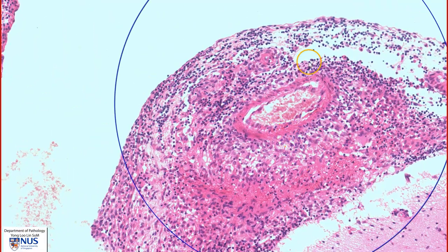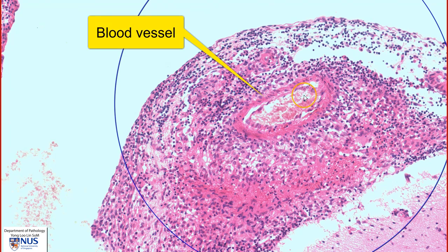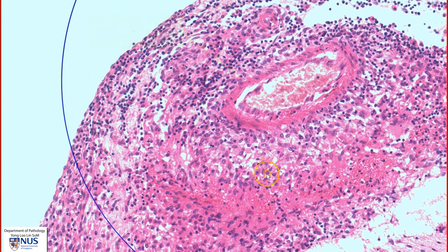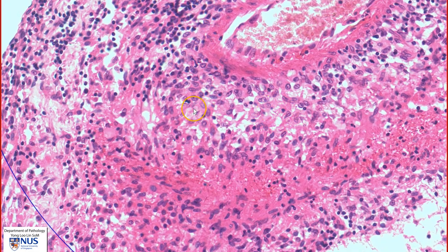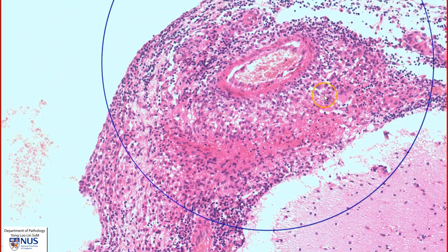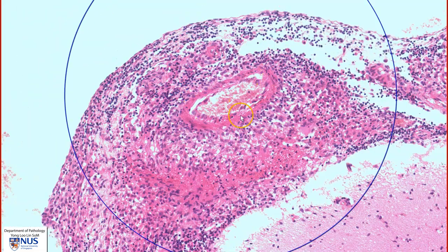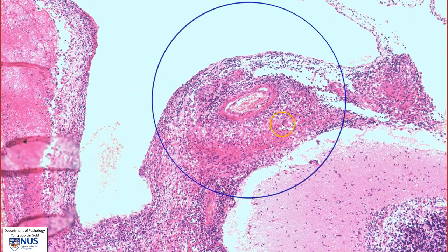This is an area where the granulomatous inflammation is seen around a blood vessel, with a central blood vessel here. We have this area of necrosis and lots of epithelioid histiocytes forming the granuloma. For this reason, the blood vessels can undergo fibrinoid necrosis as well as thrombosis, and this can lead to infarction of the area of supply in the brain parenchyma.